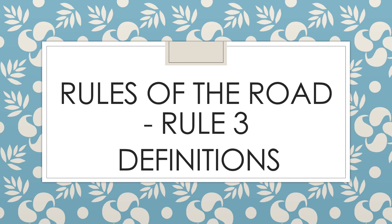Rule number three, which talks about the general definitions, provides definitions to terms that reappear throughout the rules of the road. Less frequently used terms are also defined where they appear — for example, in Rules 12b, 13b, 14b, 21, and 32.